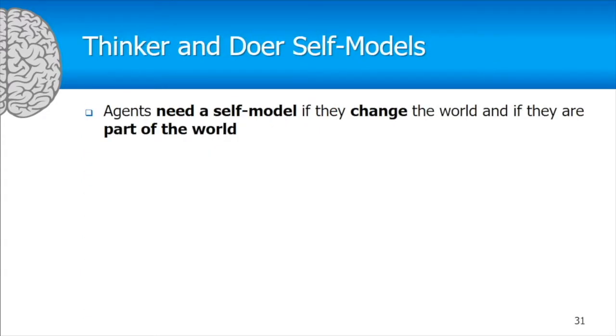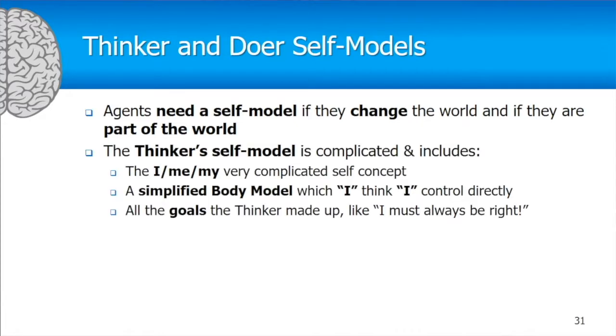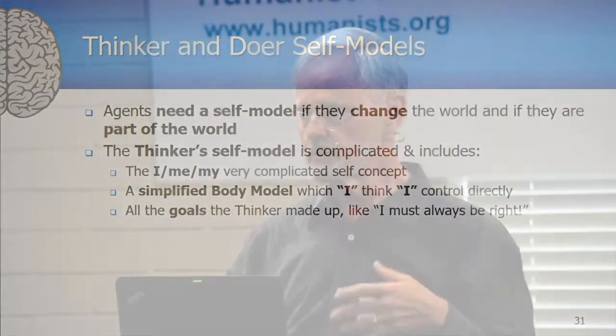Remember, an agent needs a self-model if it's part of the world that it's trying to modify. On that basis, the thinker and the doer definitely need self-models. The thinker's self-model is the very complicated I-me-my concept. It also has a simplified body model that it thinks it controls completely — 'I am in complete control of this body' — which is what the thinker believes, even though it's not true.